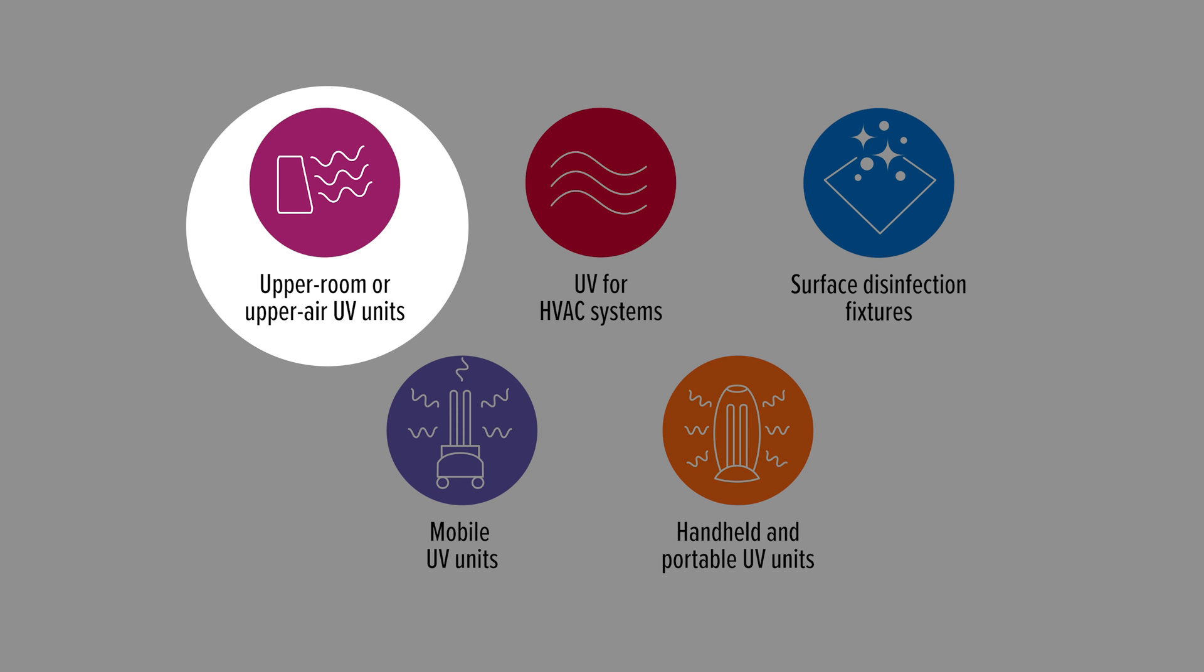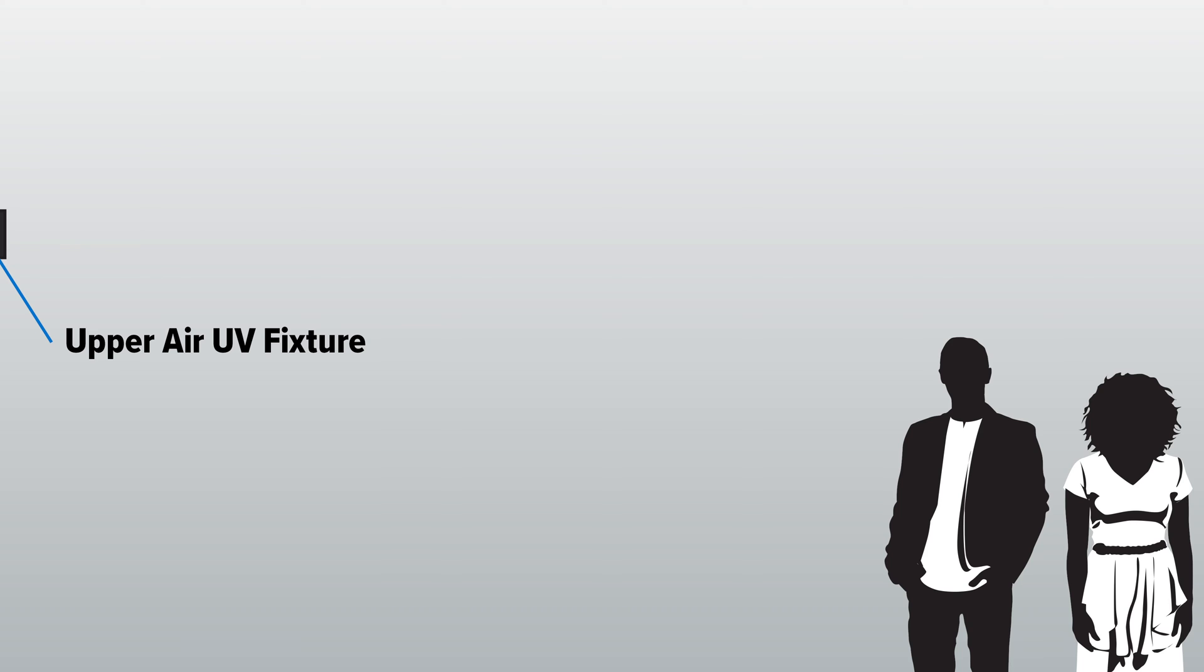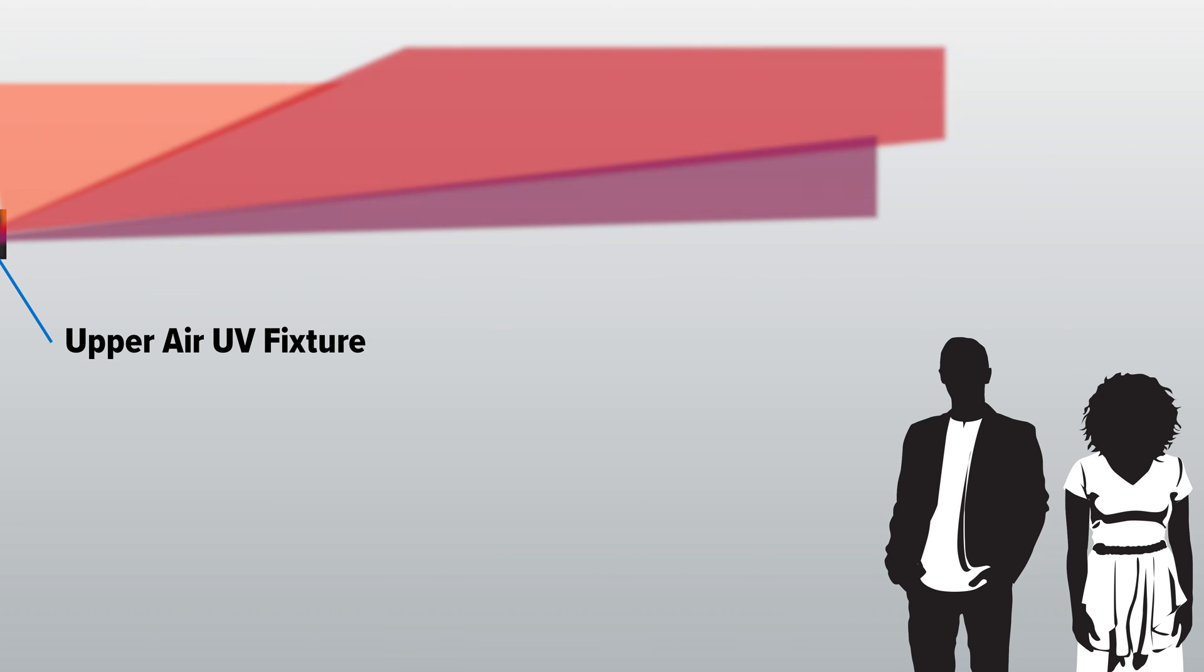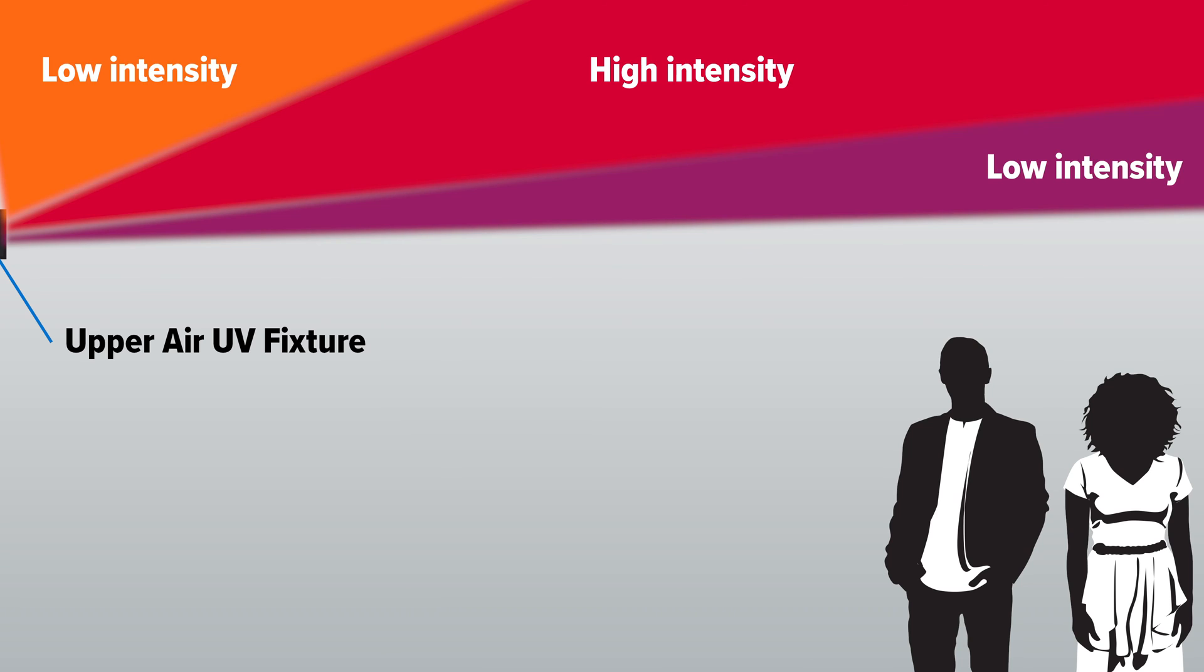Let's start with upper air units. These units emit UV rays above your head. Because the UV is targeted at air in the upper area of rooms, the units can run constantly, even in crowded areas.